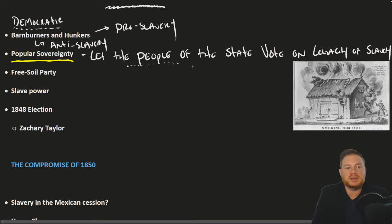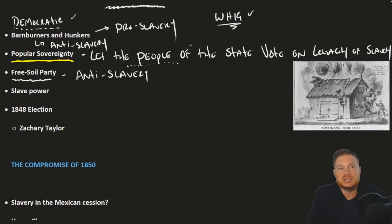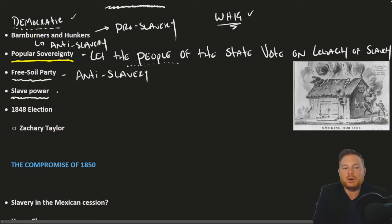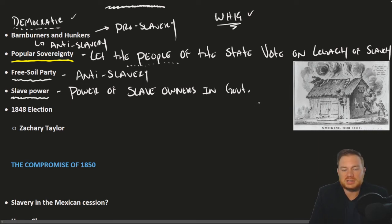Other parties created in the election of 1848 include the Free Soil Party — again, an anti-slavery party. This mostly has to do with the fact that neither the Democratic Party nor the Whig Party had a comprehensive position on slavery in the Western territories, as both were trying to appease Northern and Southern constituents. This is coming at a time when both Northerners and Southerners become more entrenched in their positions. In fact, many Northerners were convinced there was a slave power — the power of slave owners in the South — in control of the federal government, noting that most presidents up to this point were from the South.